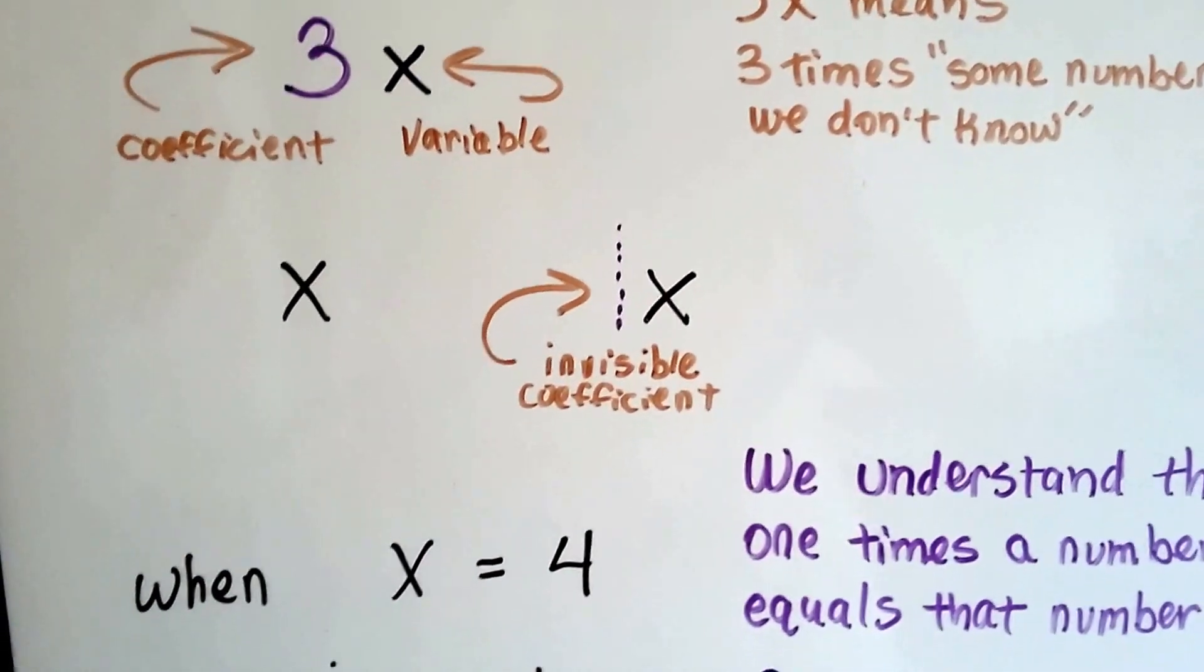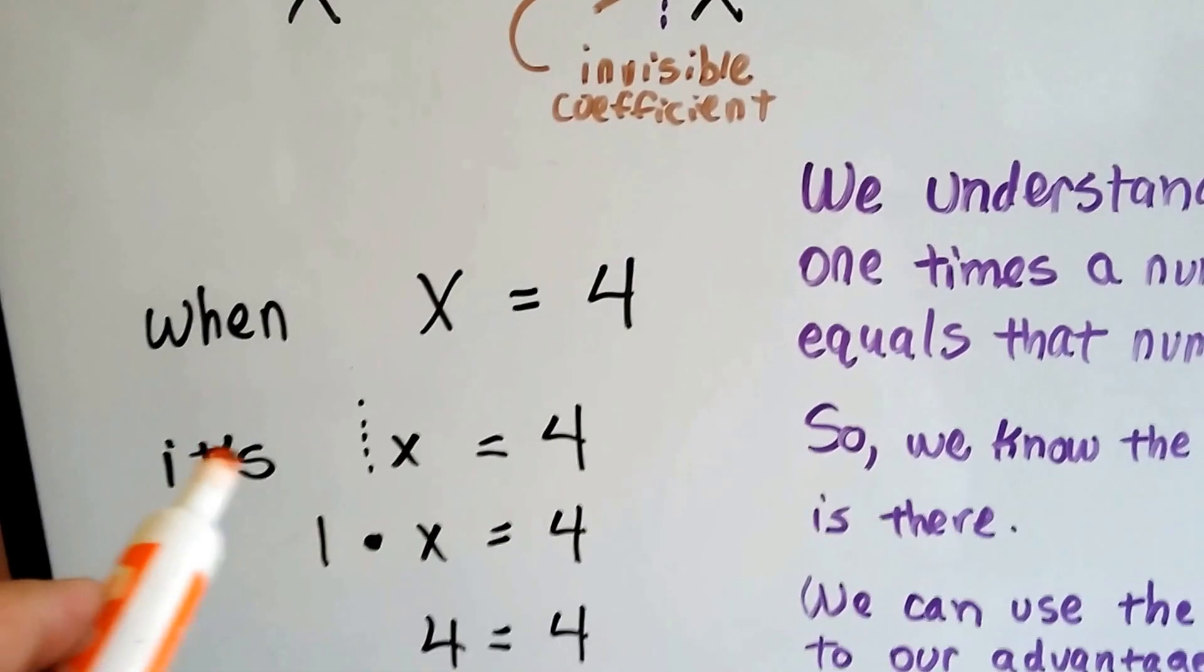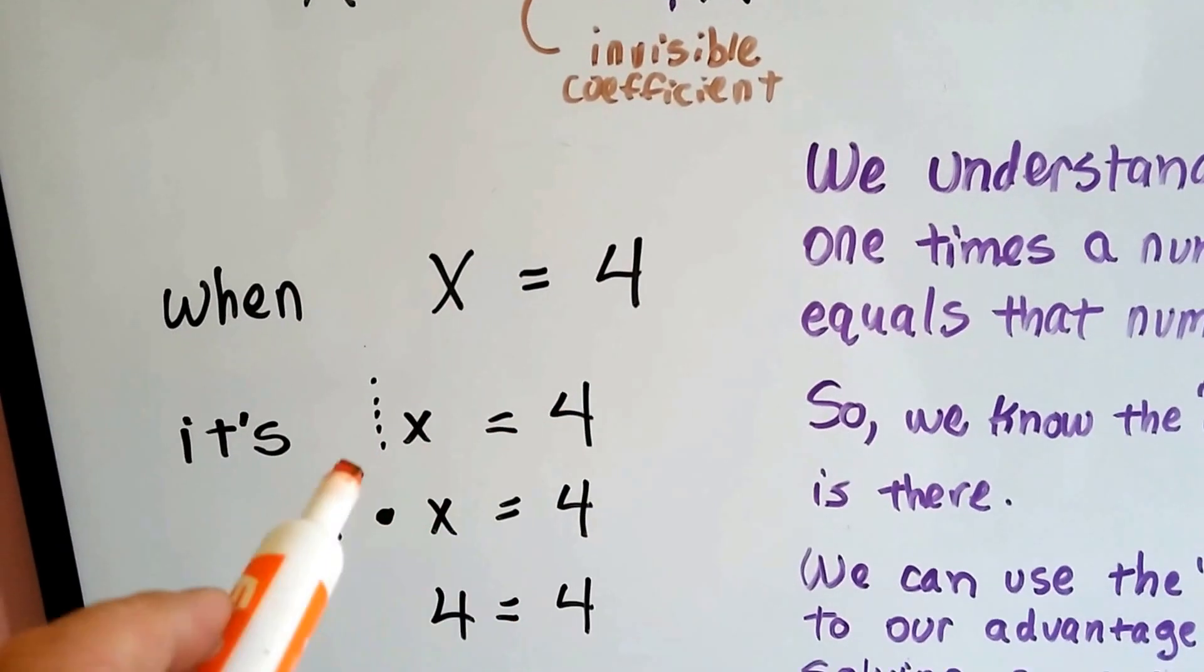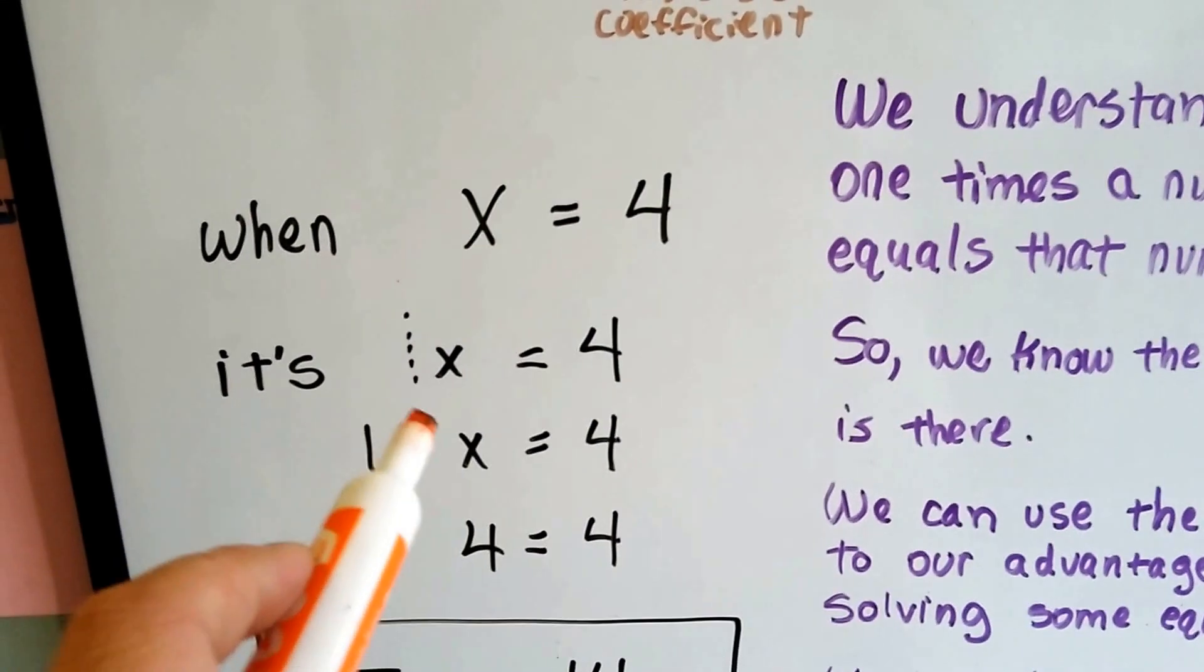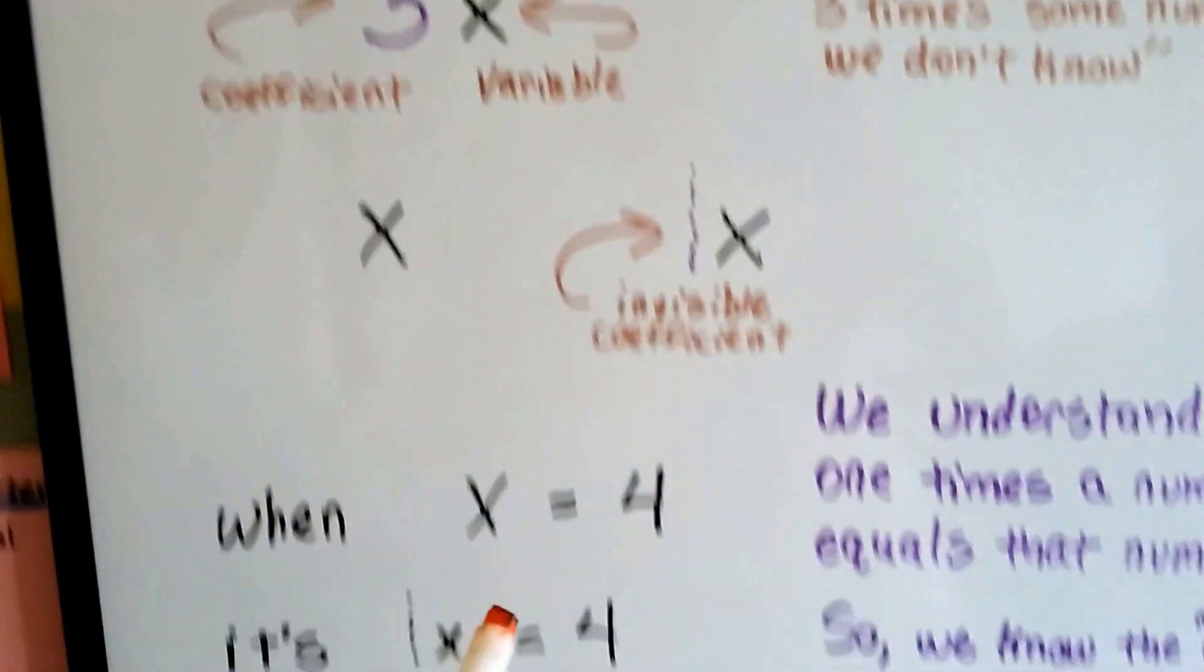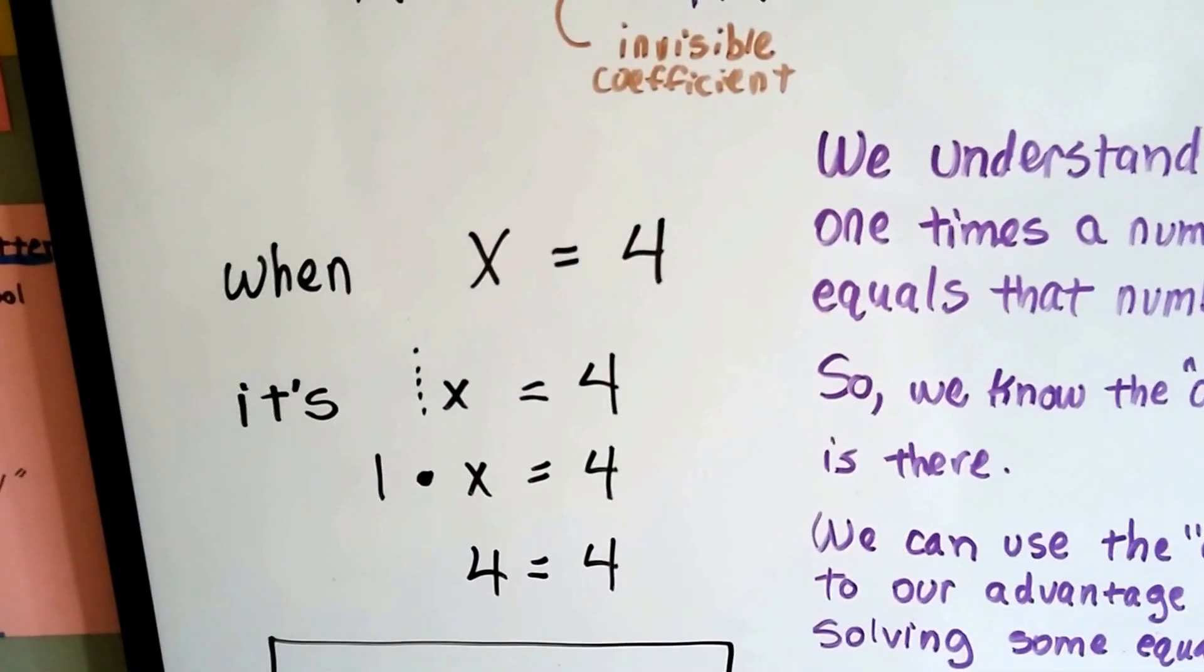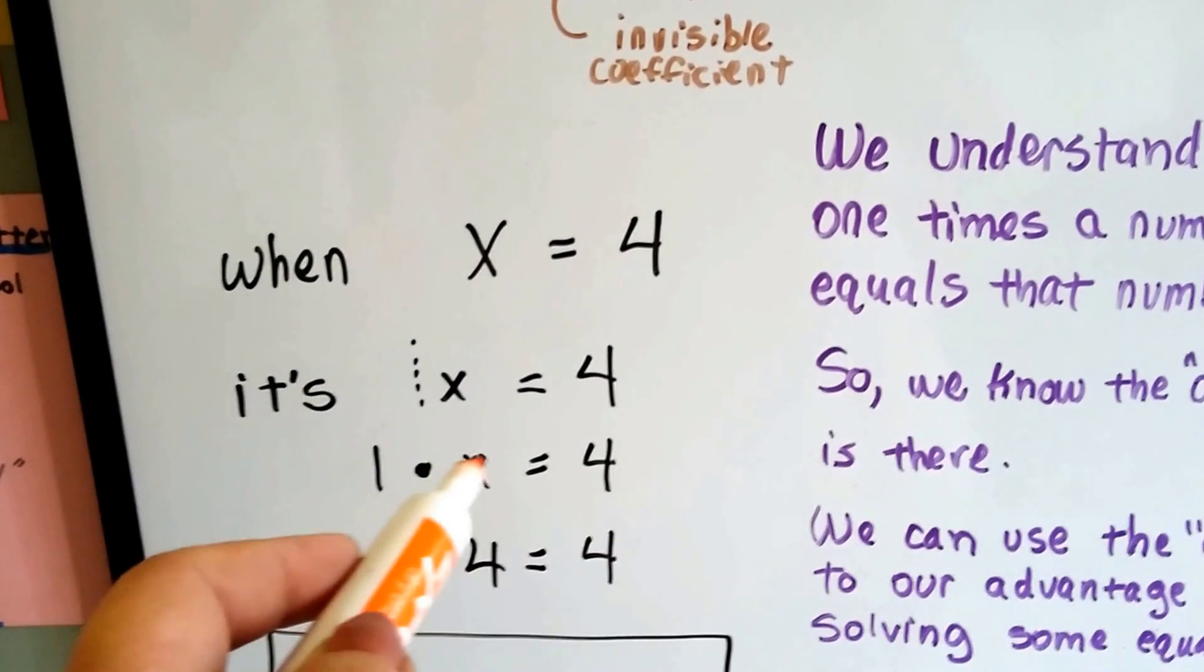Every single one of them. When we see x equals 4, it's really an invisible 1x equals 4. It means 1 times x. Just as this means 3 times x, this would mean 1 times x.